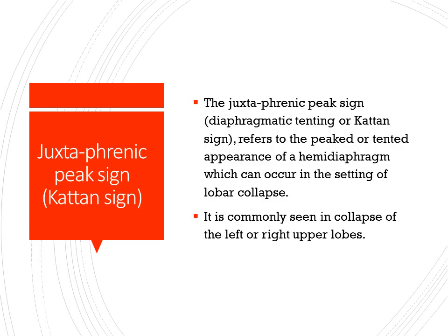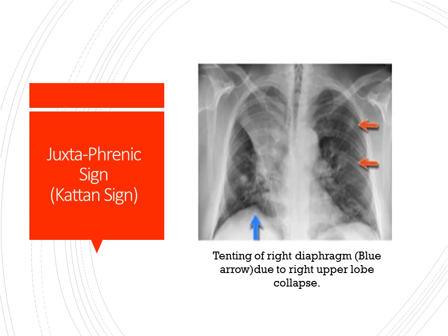The Juxtaphrenic Peak Sign refers to the peaked or tented appearance of a hemidiaphragm which can occur in the setting of lobe collapse. It is commonly seen in collapse of the left or right upper lobe. You can see the tenting of the right hemidiaphragm because of the collapse of the right upper lobe.